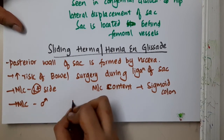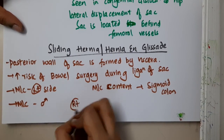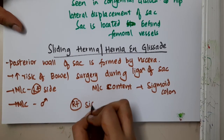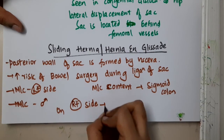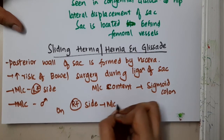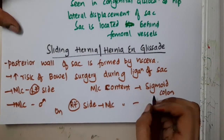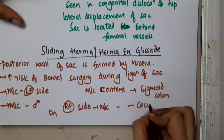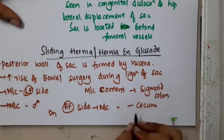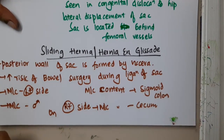If the sliding hernia is on the right side, the most common content is the cecum.